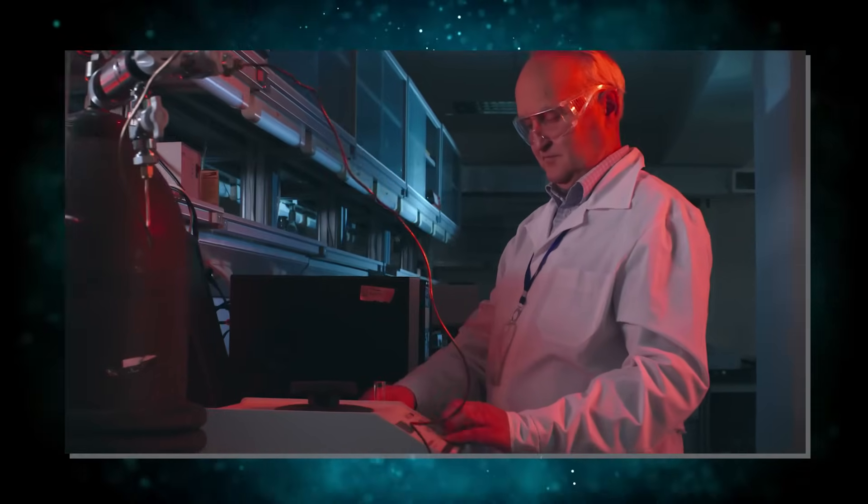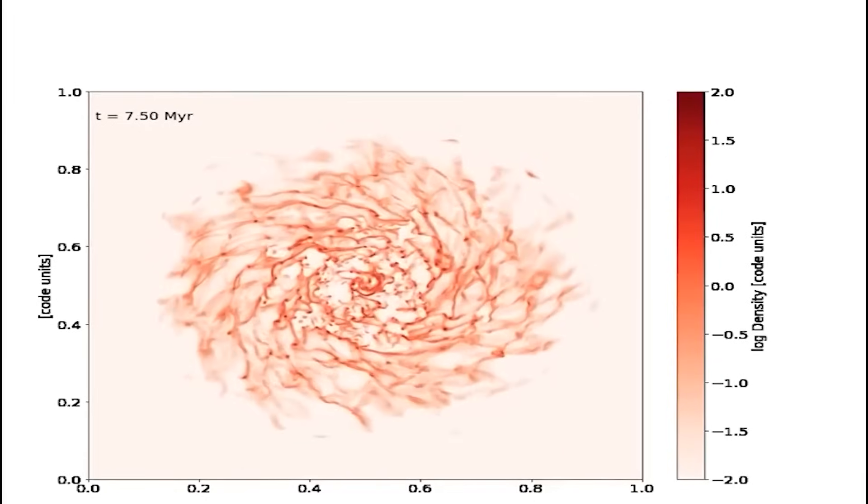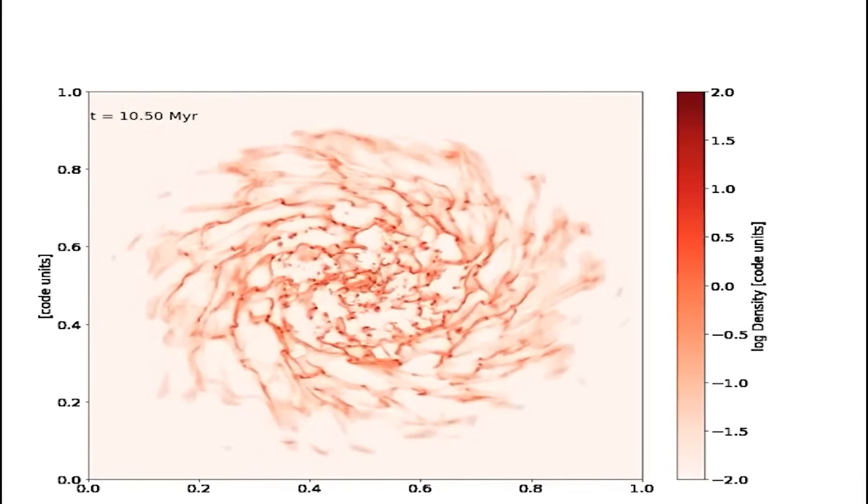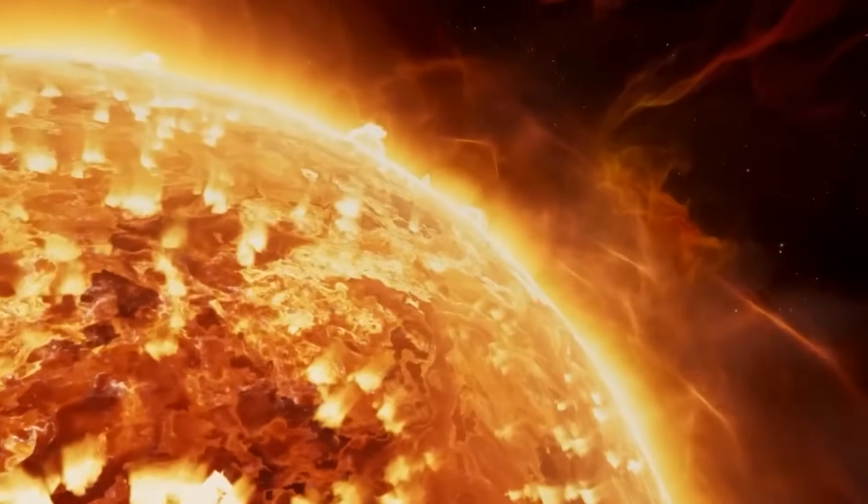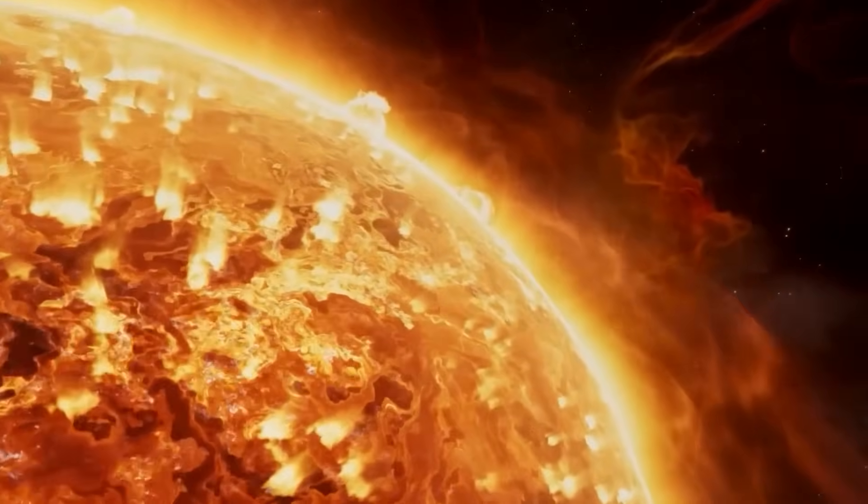Red supergiants are known for shedding massive amounts of material in their later stages. This process is crucial in shaping their evolution and eventual supernova explosions. Yet how they lose this mass, at what rate, and what triggers these outbursts, remains unclear.